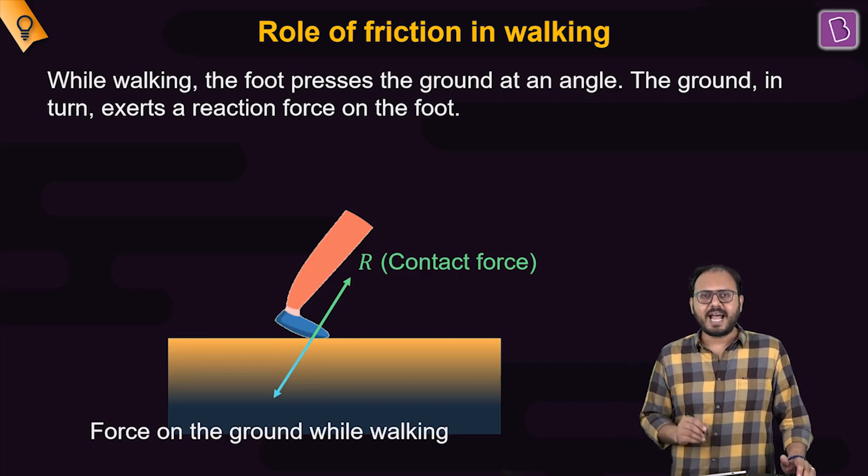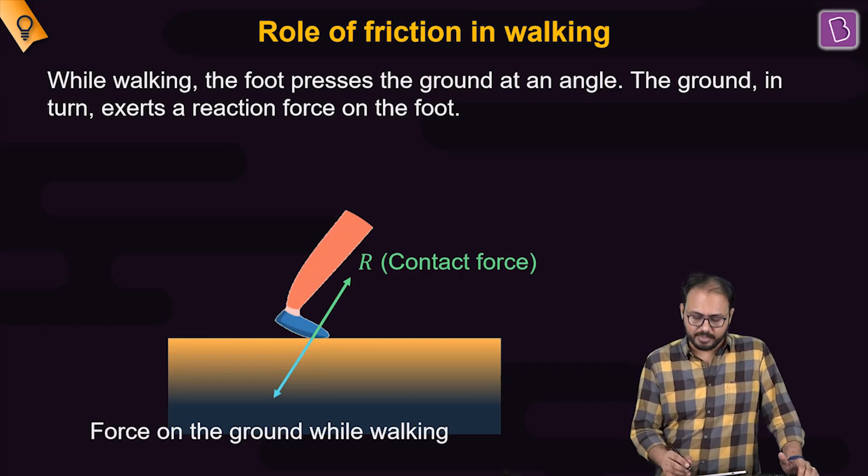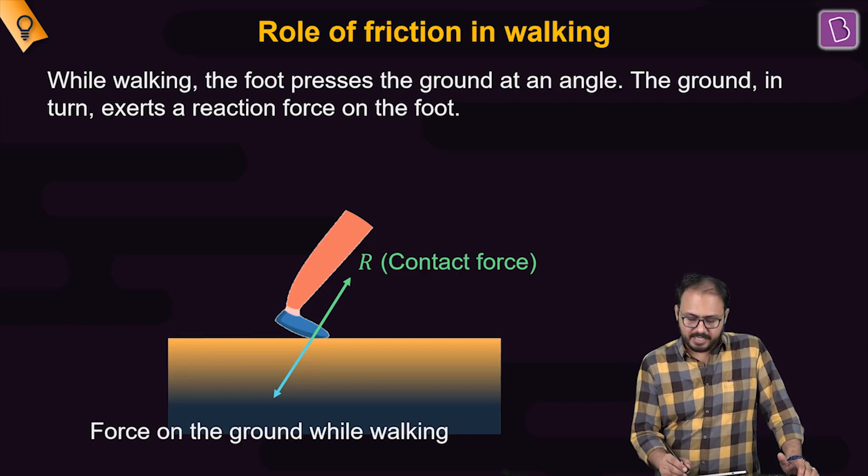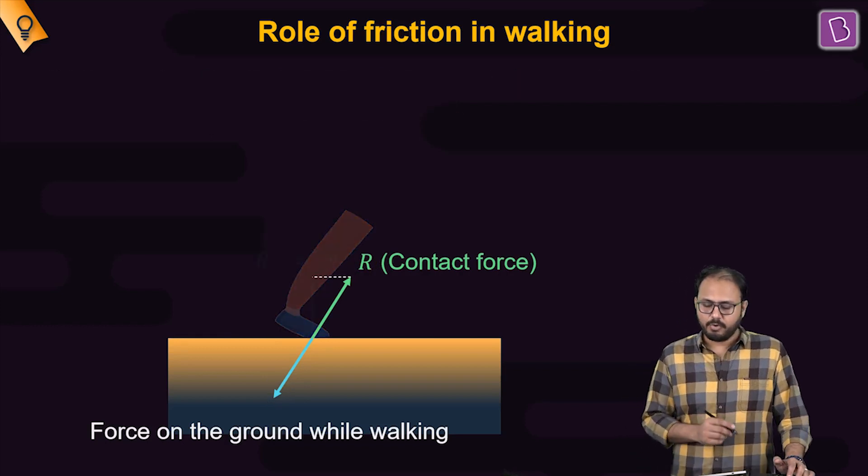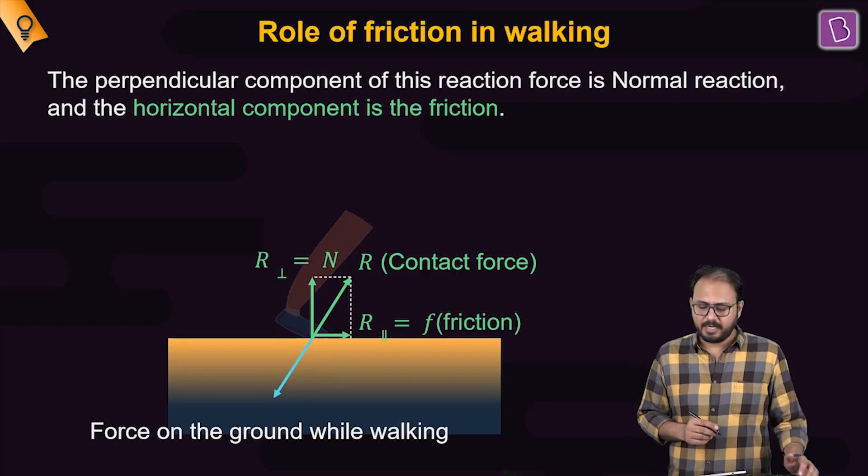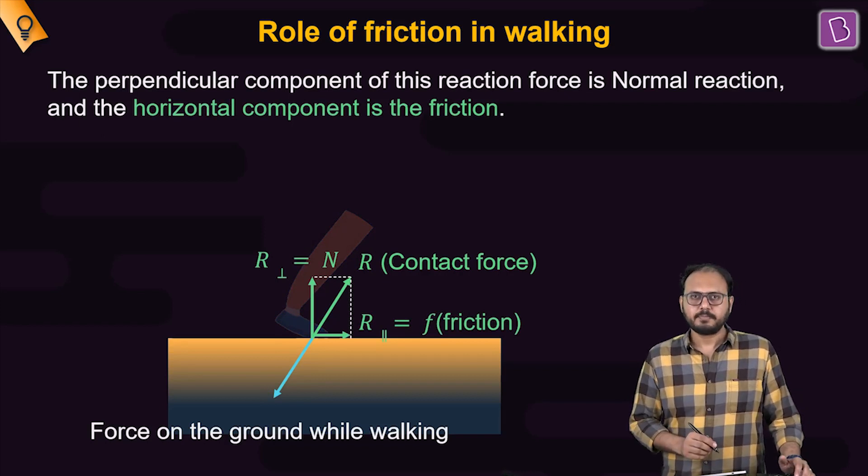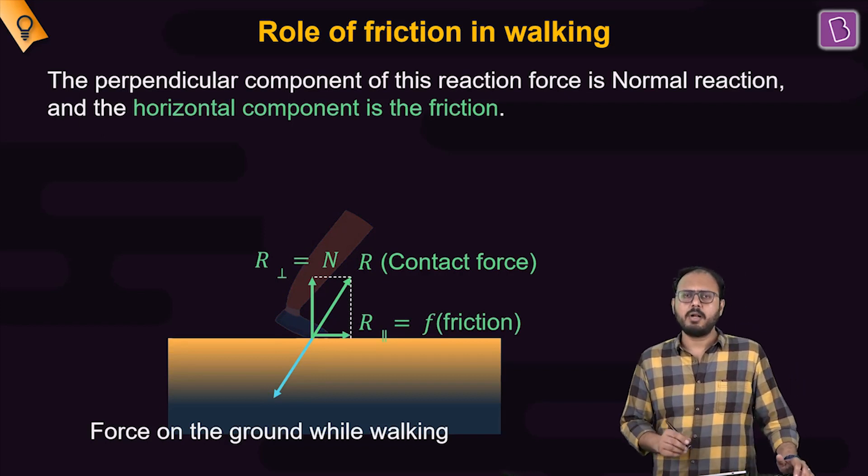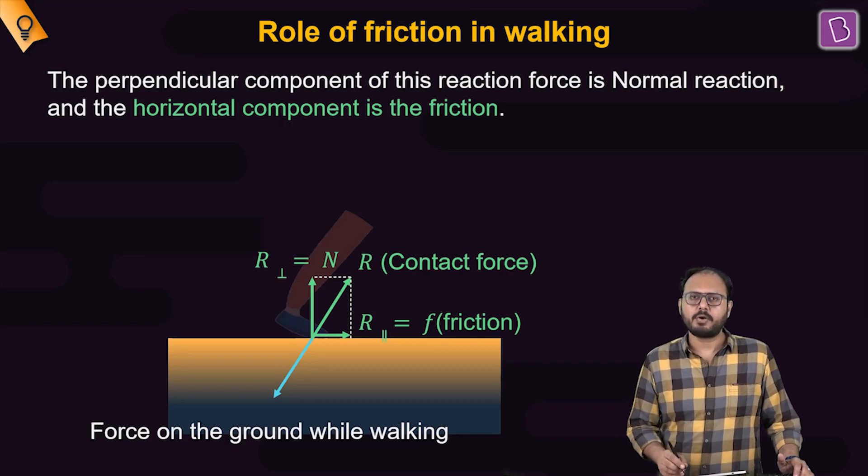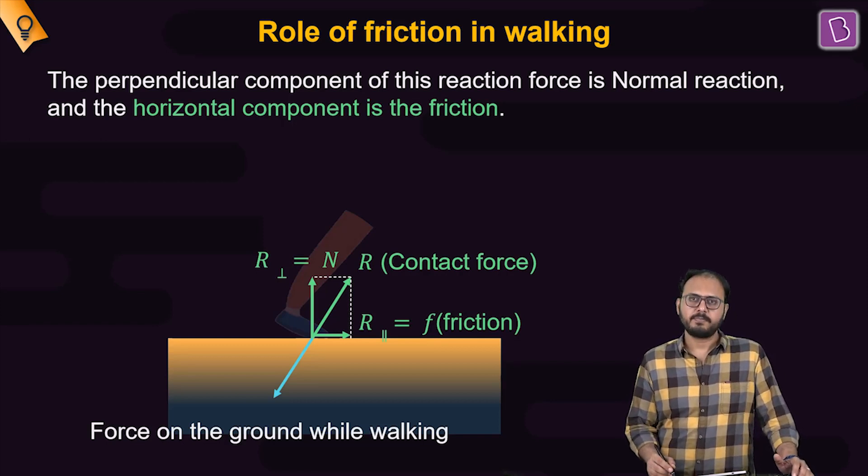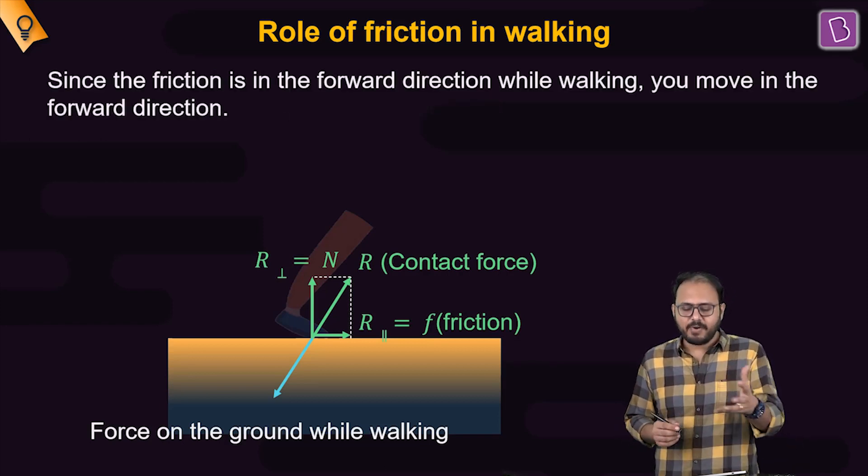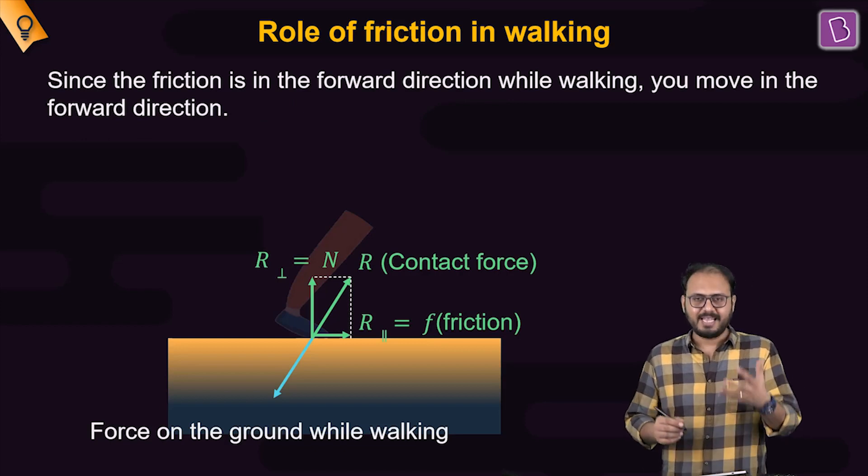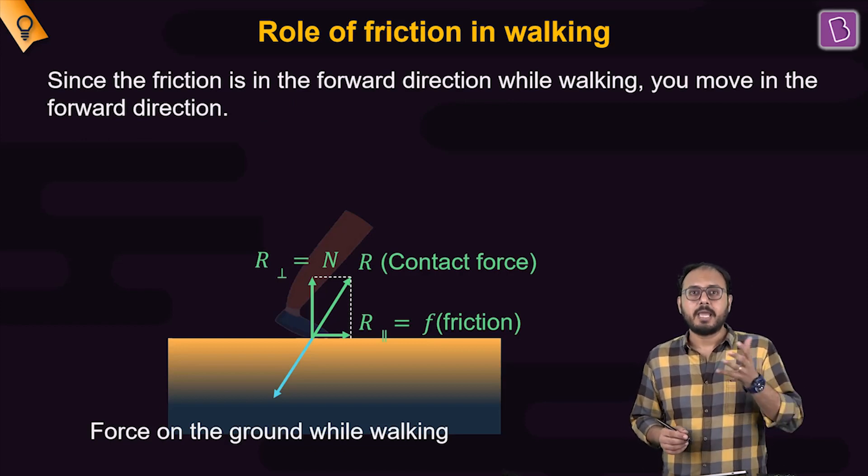The contact force between you and the ground is in such a way that the ground gets pushed this way and the contact force on you is tilted forward. You know that it has two components: one perpendicular and one parallel. The perpendicular component is called normal reaction. The parallel component is called friction. So in fact, friction is the component which is in the forward direction while you walk. And that is the reason why you are able to walk.